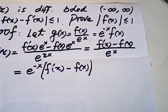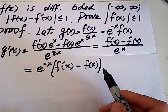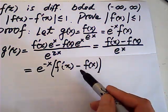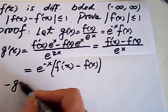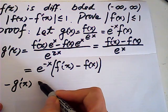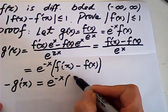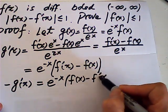And then I take a negative out, it becomes negative g prime equal to e to the negative x times f of x minus f prime of x.